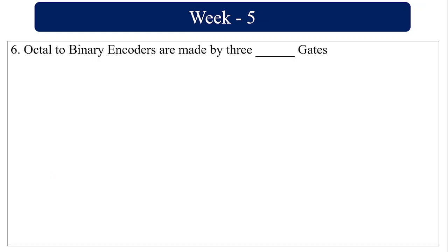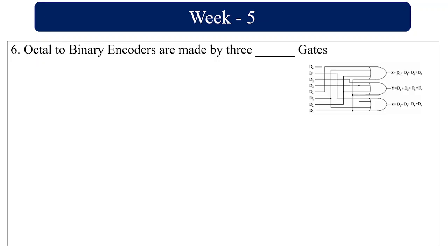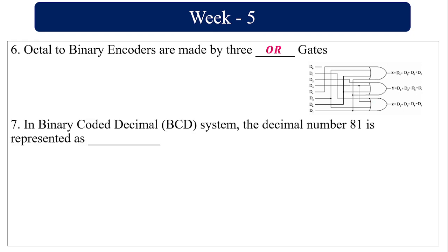Octal-to-binary encoders are made by 3 OR gates. So this is the circuit for the octal-to-binary encoder — it is made up of OR gates, specifically 3 OR gates.